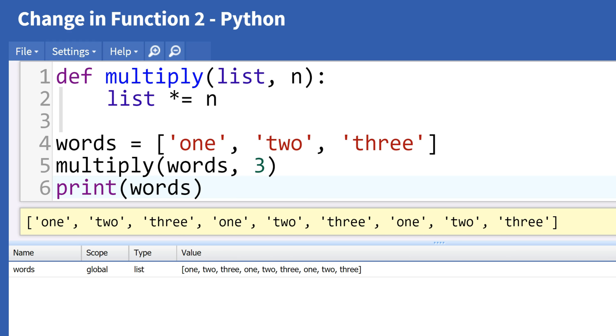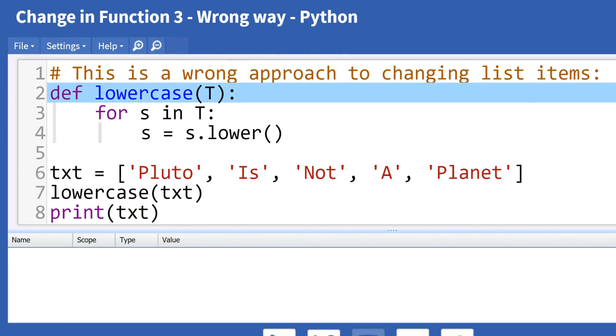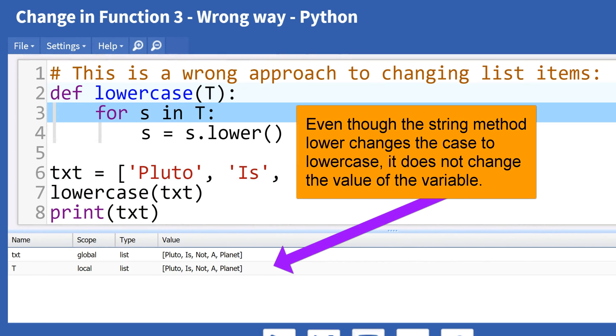We need to be careful how we write our functions. When we want to modify the list items, we must access them using their indices. First, let's look at a function that does not work. We tried to reassign the string variable s, and it did not work because strings are immutable.